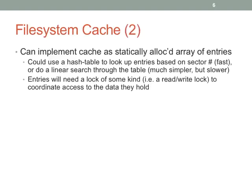Since this cache is a fixed size, you can declare an array in your kernel's data segment — 64 entries. The grading guidelines for Pintos actually say it's okay to do a linear search through this cache. It sounds terrible, but it's only 64 entries. You can also use a hash table to look up the entry corresponding to a specific sector to see if it's in the cache.